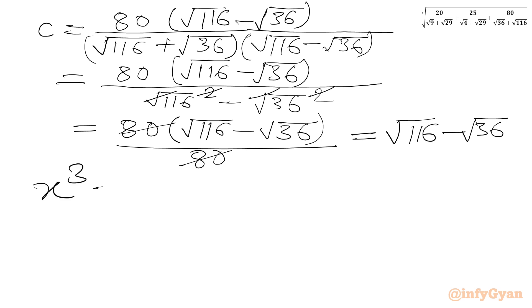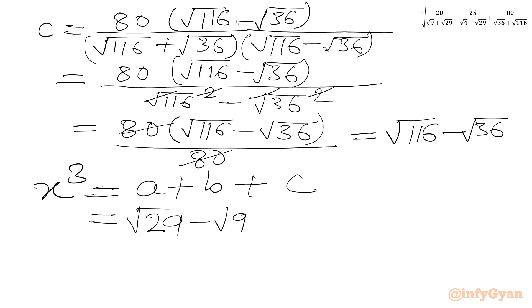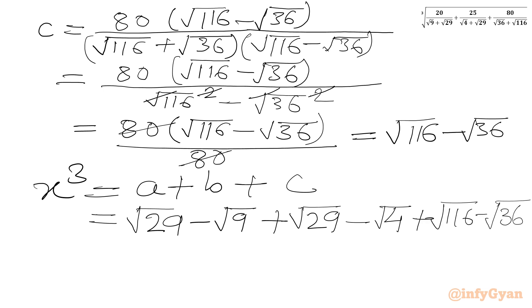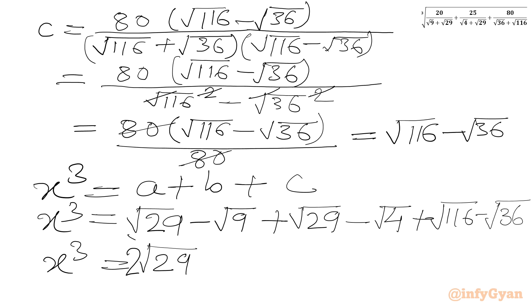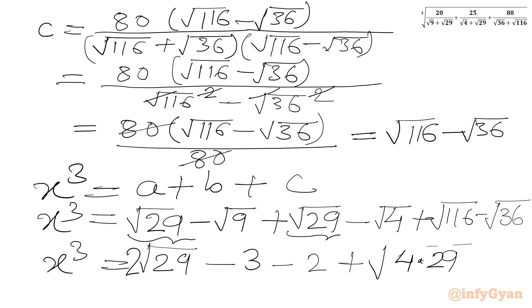Let us write x³ = a + b + c. A was √29 − √9, b was √29 − √4, and c is √116 − √36. Now we can write √9 = 3, √4 = 2, √36 = 6. So x³ = √29 + √29 = 2√29, minus 3 minus 2, plus √116. We can write √116 = √(4×29) = 2√29. Minus 6. Adding the constants: −3 − 2 − 6 = −11. So x³ = 4√29 − 11.